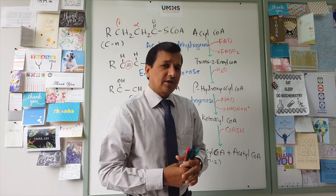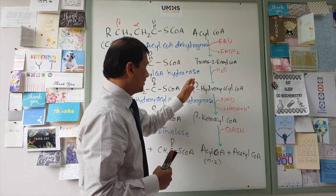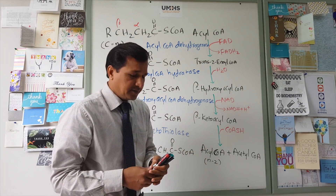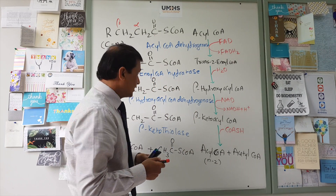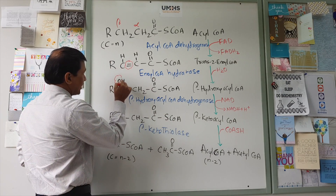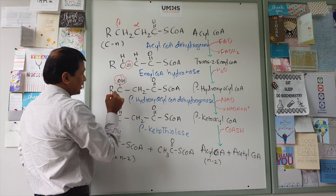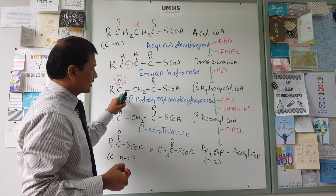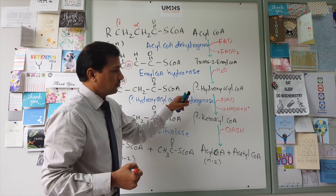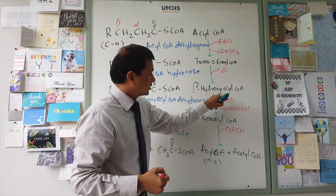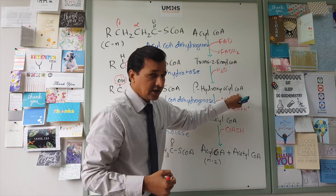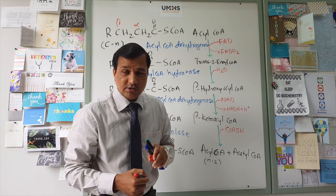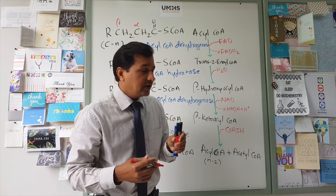Trans-2-enoyl-CoA undergoes a hydration reaction catalyzed by enoyl-CoA hydratase, resulting in a hydroxyl group attached to the beta carbon. The resulting molecule is beta-hydroxyacyl-CoA, named because the beta carbon now carries a hydroxyl group.